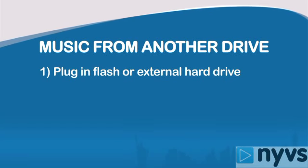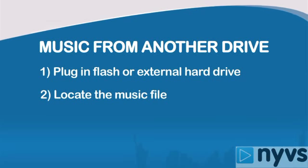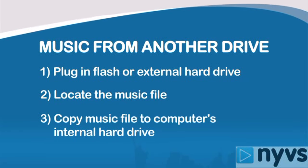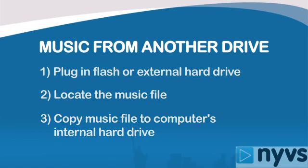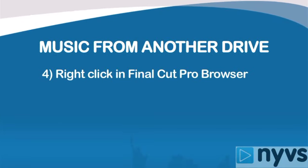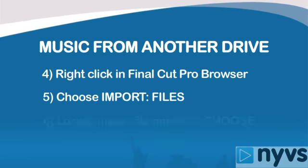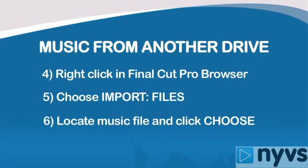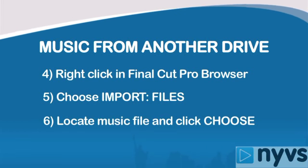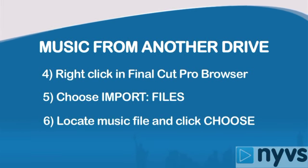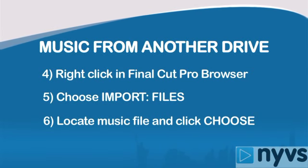If you're bringing your music in from another source, such as a flash drive or external hard drive, repeat the same steps as for a CD. Plug in your flash drive or external hard drive, find your music file, then copy it to your computer's internal hard drive. Then, while in your Final Cut project browser, right-click, choose Import, then choose Files. Navigate to where your copied music track is, highlight it, then click Choose. It'll then show up in your browser as a clip for you to edit.